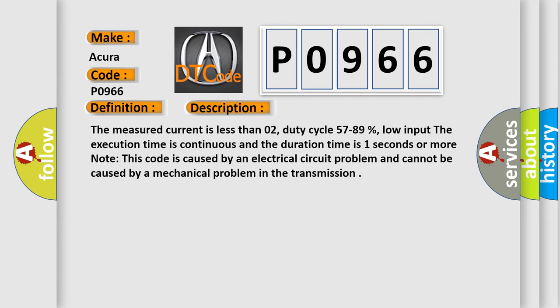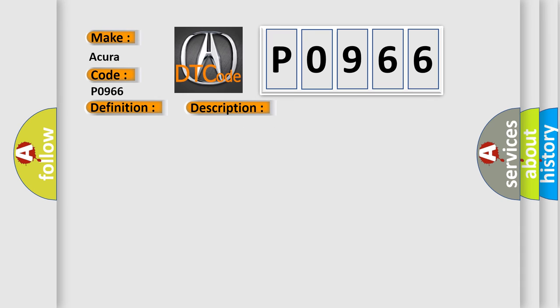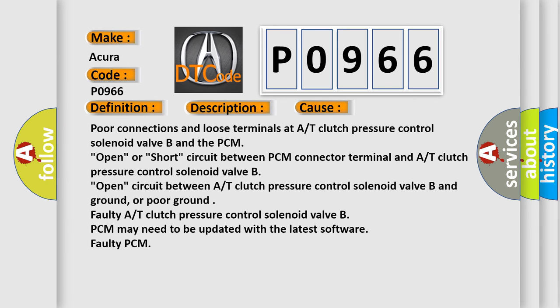This code is caused by an electrical circuit problem and cannot be caused by a mechanical problem in the transmission. This diagnostic error occurs most often in these cases: Poor connections and loose terminals at A/T clutch pressure control solenoid valve B and the PCM; open or short circuit between PCM connector terminal and A/T clutch pressure control solenoid valve B; open circuit between A/T clutch pressure control solenoid valve B and ground, or poor ground; faulty A/T clutch pressure control solenoid valve B; PCM may need to be updated with the latest software; faulty PCM.